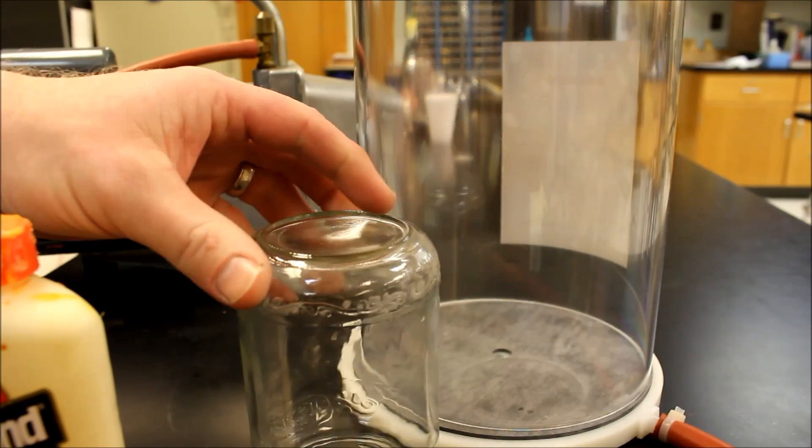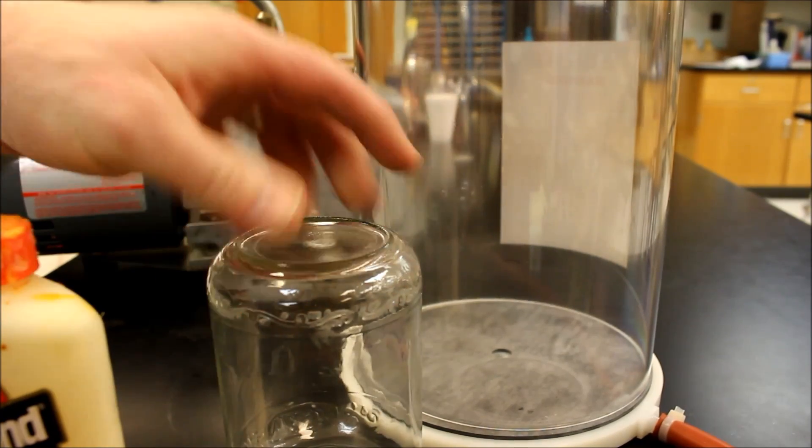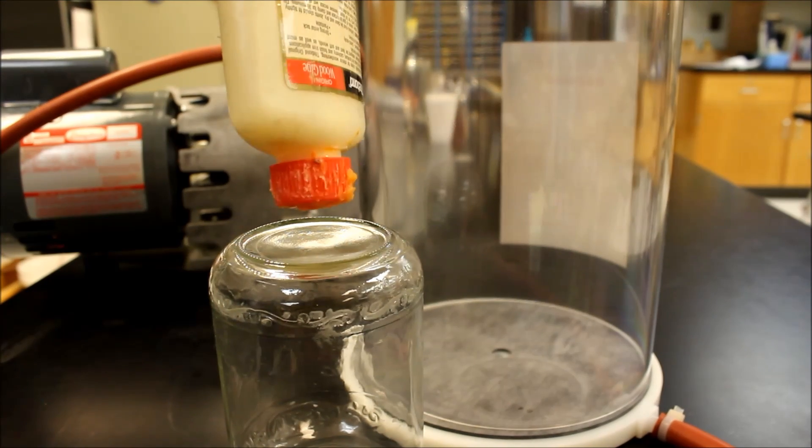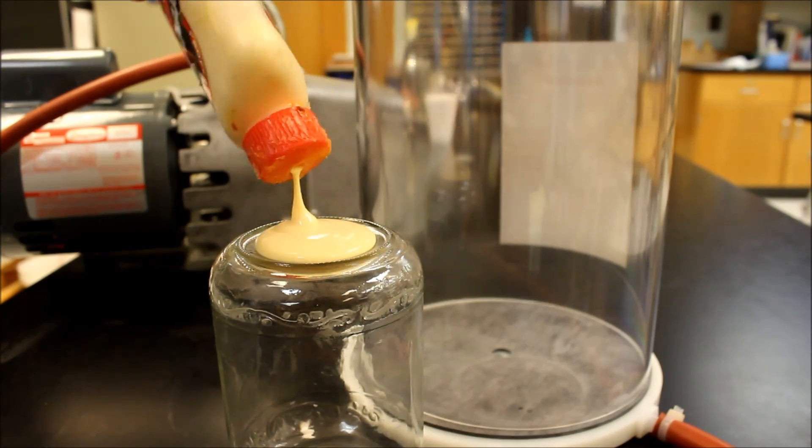So what I thought I'd do to make this as clear as possible is I'm taking this pickle jar, turning it upside down, and in this concave area I'm going to put in some wood glue. Here we go.